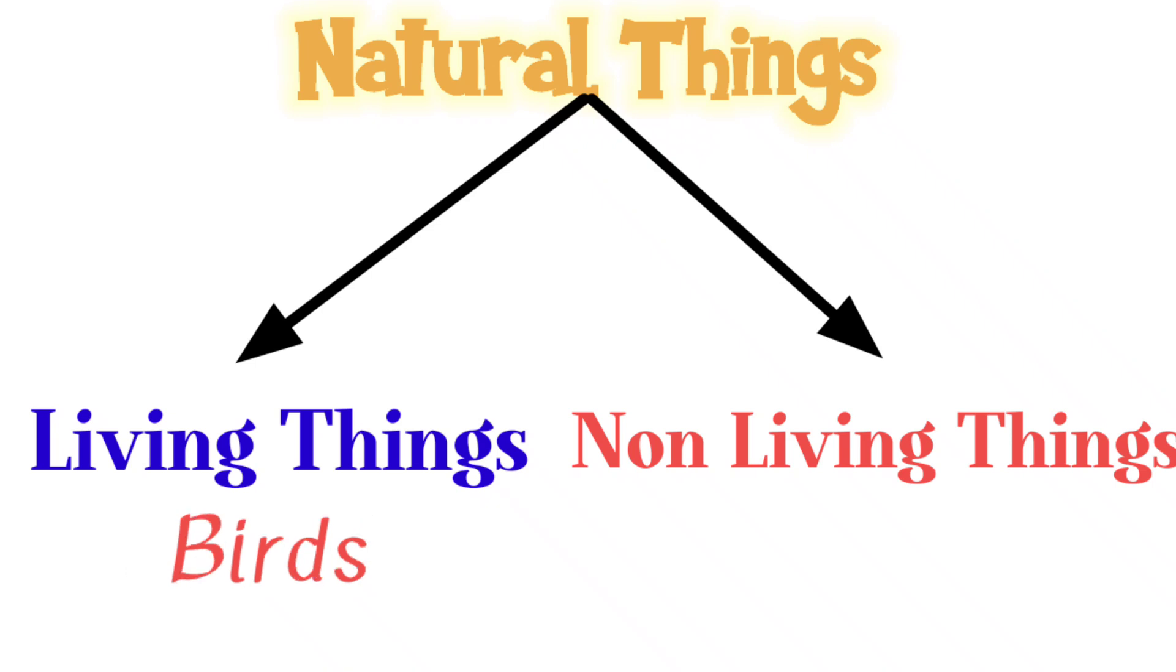Non-living things, things which do not show all the above characteristics, like no food, no breathing, no movement, no growth, no feelings, and no reproduction. These are called non-living things, like mountain, river, rocks, sun, moon, etc.